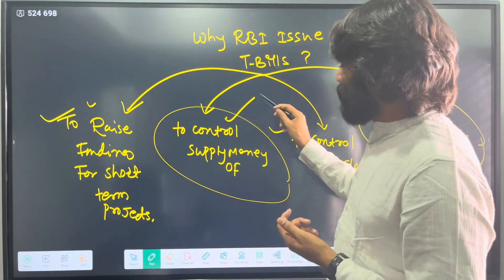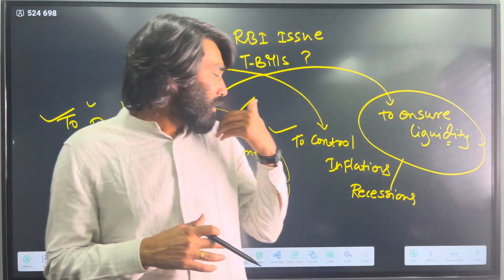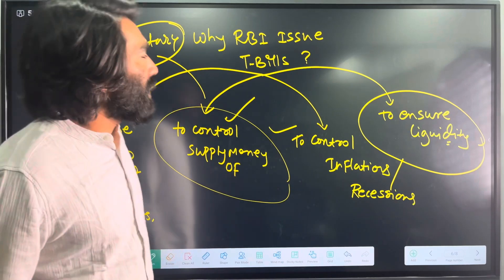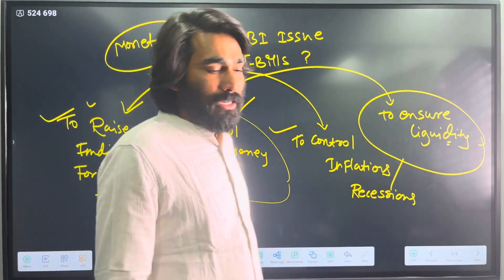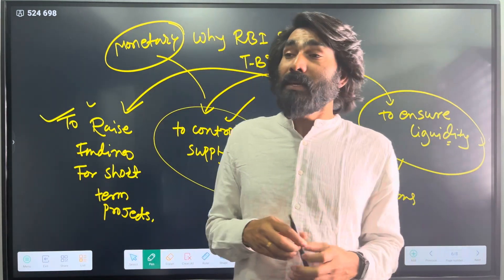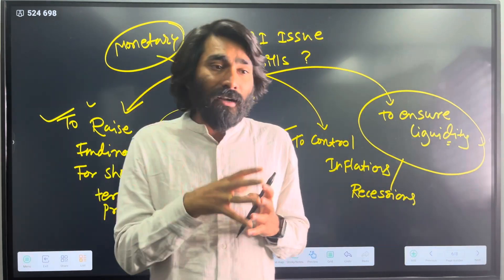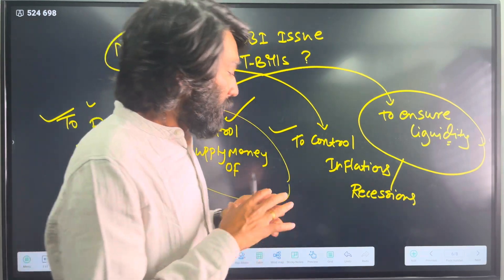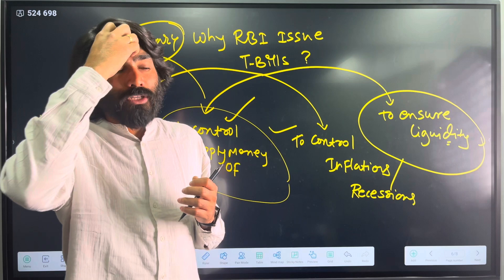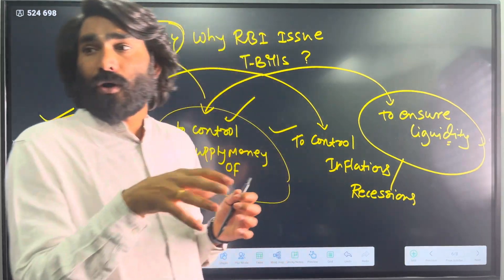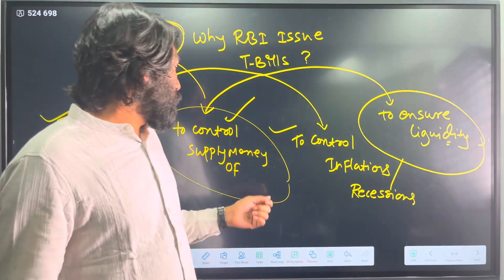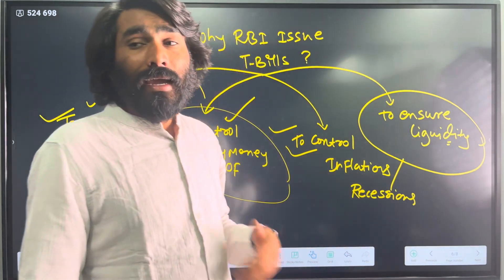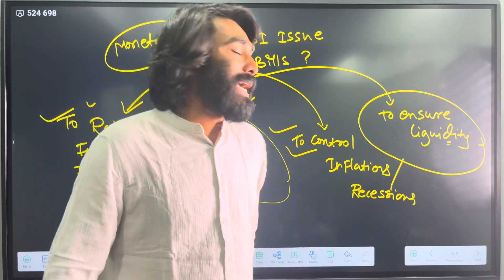Another reason is to control the supply of money, which is very important from an inflation and recession perspective. Under monetary policy, both the government and RBI ensure the supply of money in the market — maintaining enough liquidity and a balanced flow of funds. If there is a high supply of printed notes, it leads to inflation. If there is no liquidity in the market, you see price shocks, depression, or an economic slowdown. RBI always ensures the money supply remains balanced.